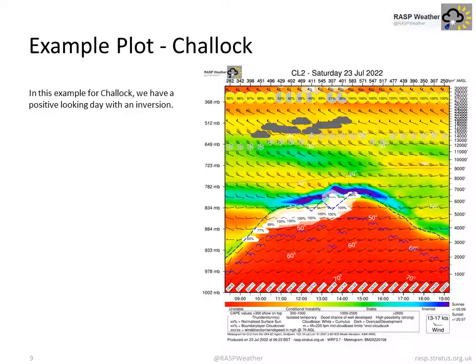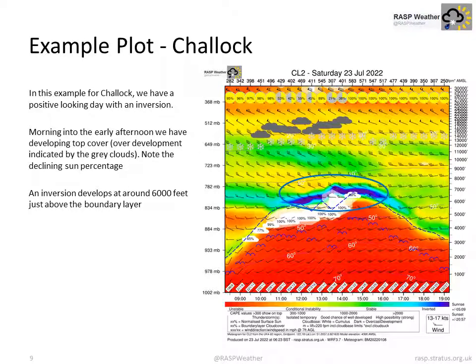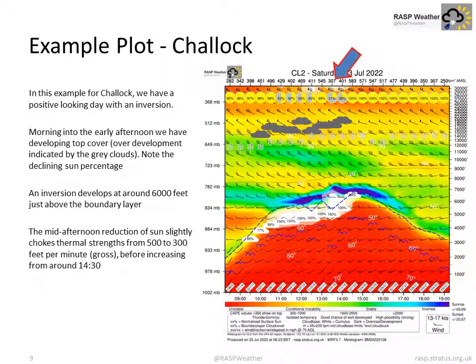Let's have a look at Chalak. In this case we have a positive day with an inversion. Morning and into the early afternoon we have developing top cover — that's the overdevelopment indicated by the grey clouds. Note the declining sun percentage. An inversion develops at around 6,000 feet just above the boundary layer. The mid-afternoon reduction of sun slightly chokes thermal strengths from 500 to 300 feet per minute gross, before increasing again from around 2:30.